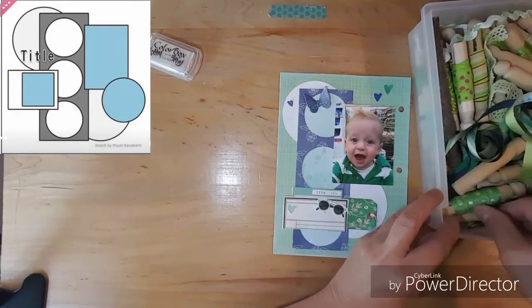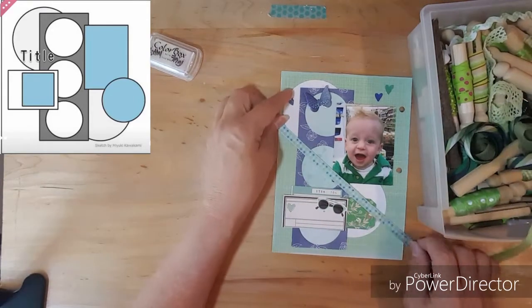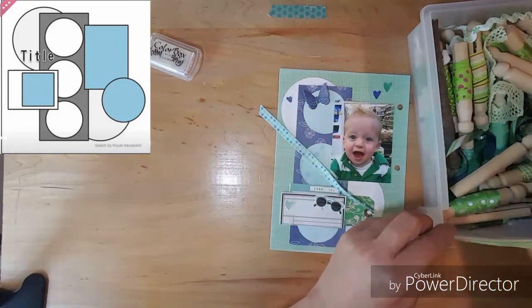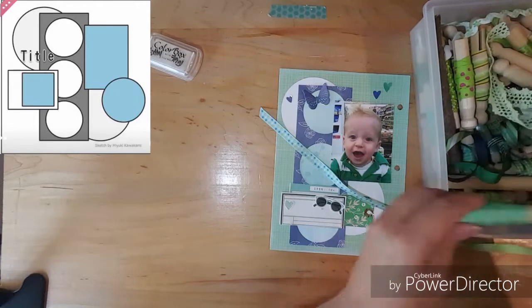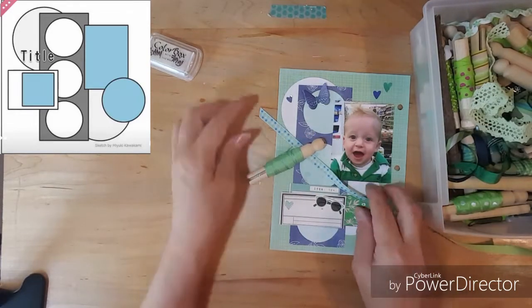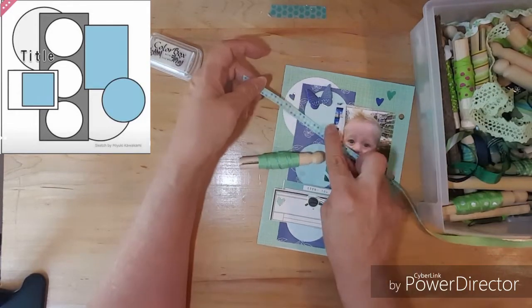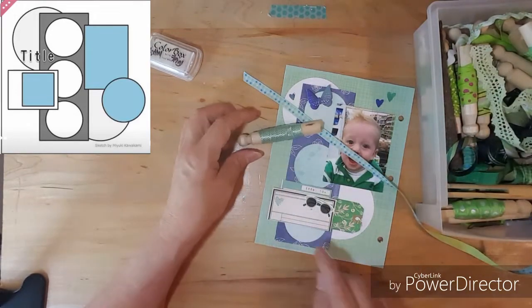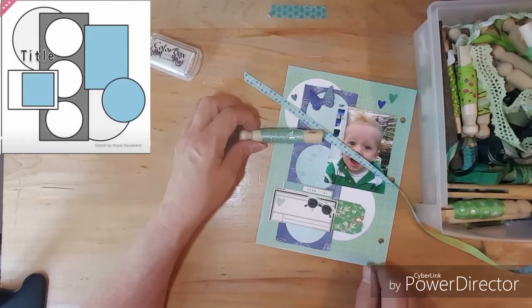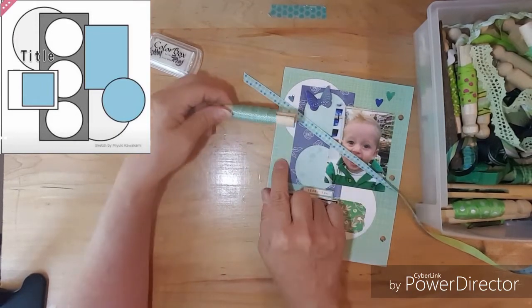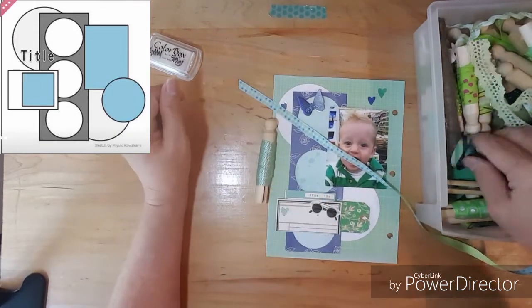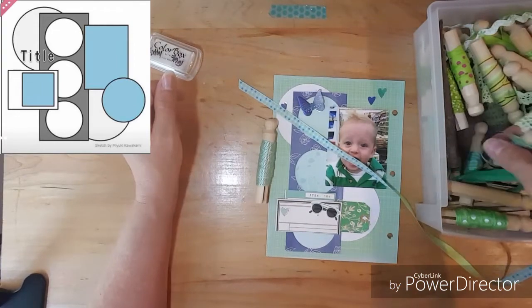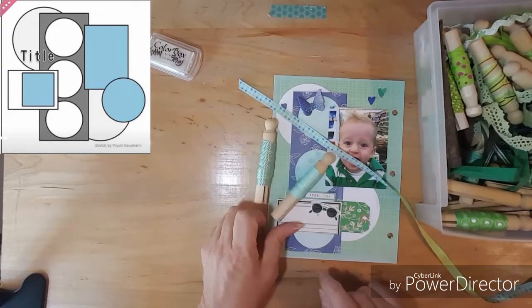And I thought, what if there were some that would kind of match? I would staple some. I like that - this brings out the blue so that's my first choice. Then there's this one. I could use both. That brings out the blue, this brings out the paper. Which one should I do? Then there's this one.